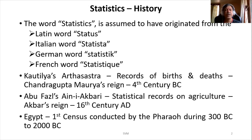Some say statistics were used even in the Mahabharata to maintain records of their army — how many horses and how many elephants they were having. All those things are said to have been maintained by Nakul and Sahadev on the Pandava side. You don't have any concrete proof for those things, but if those epics are considered a reality, then definitely they needed to maintain some sort of records, which you can call statistics.